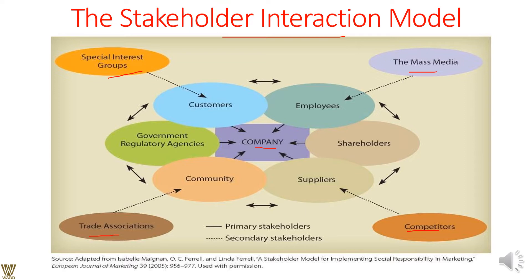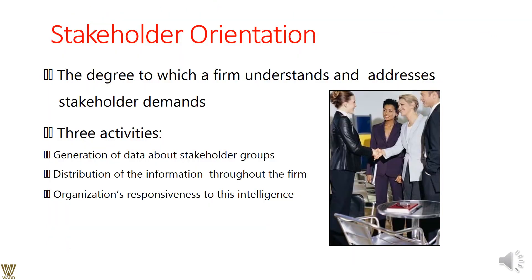In the stakeholder interaction model, company employees, shareholders, suppliers, community, and government agencies are directly or almost directly linked as primary stakeholders. SIGs, mass media, trade associations, and competitors are indirectly linked as secondary stakeholders — because based on the company's performance, competitors will have to make changes in their approach to doing business.